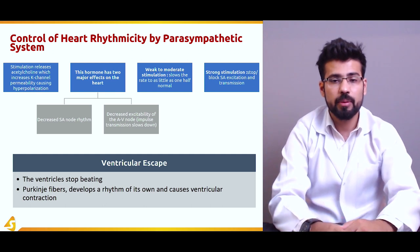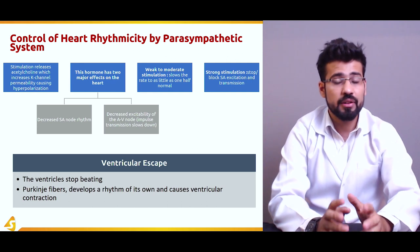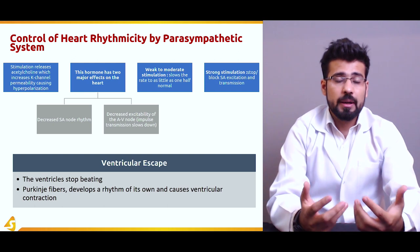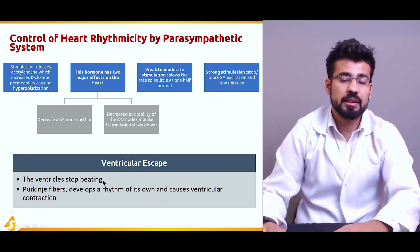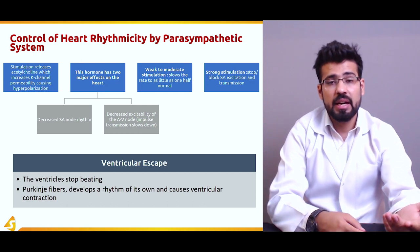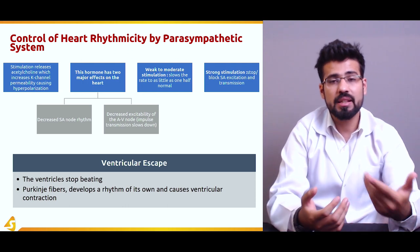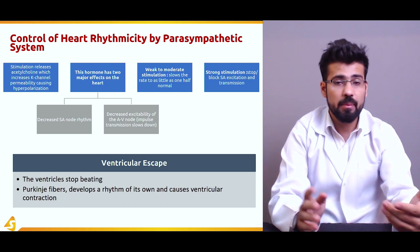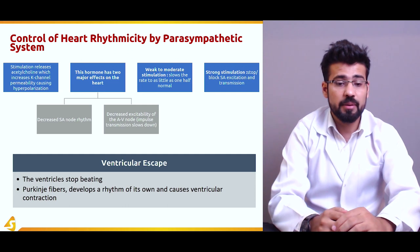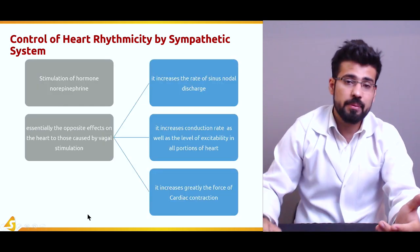Weak to moderate parasympathetic stimulation slows the heart rate to about one-half of normal. Strong stimulation can cause permanent blockage of SA excitation and transmission. If strong stimulation remains for a particularly long time, it can cause the beating of the heart to stop. When this happens — ventricular escape — the ventricles stop beating because they are not receiving excitatory signals from the SA node. After a delay, the Purkinje fibers develop their own pacemaker; this particular escape of ventricular contraction is known as ventricular escape.